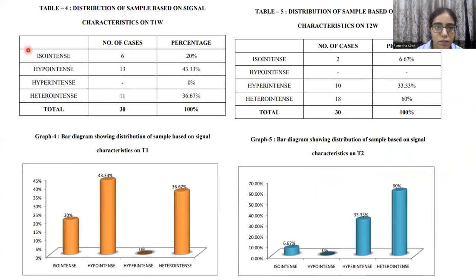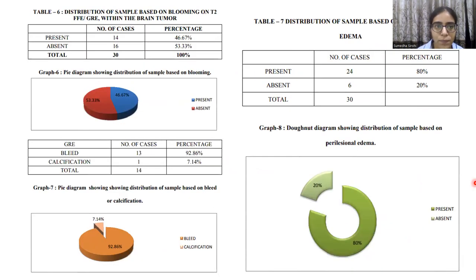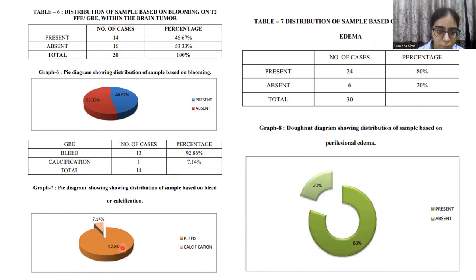Distribution based on T1-weighted imaging characteristics: approximately 40% of the lesions were hypointense, 36% were heterointense, and 20% were isointense. T2-weighted imaging showed approximately 60% of lesions being T2 heterointense, 30% T2 hyperintense, and 6% T2 isointense. A table also showed the proportion of brain tumors with blooming on T2-weighted imaging or GRE — approximately 53% of lesions showed blooming, while 46% did not. Of those showing blooming, approximately 92% were bleeds and the remaining 7% were calcifications.